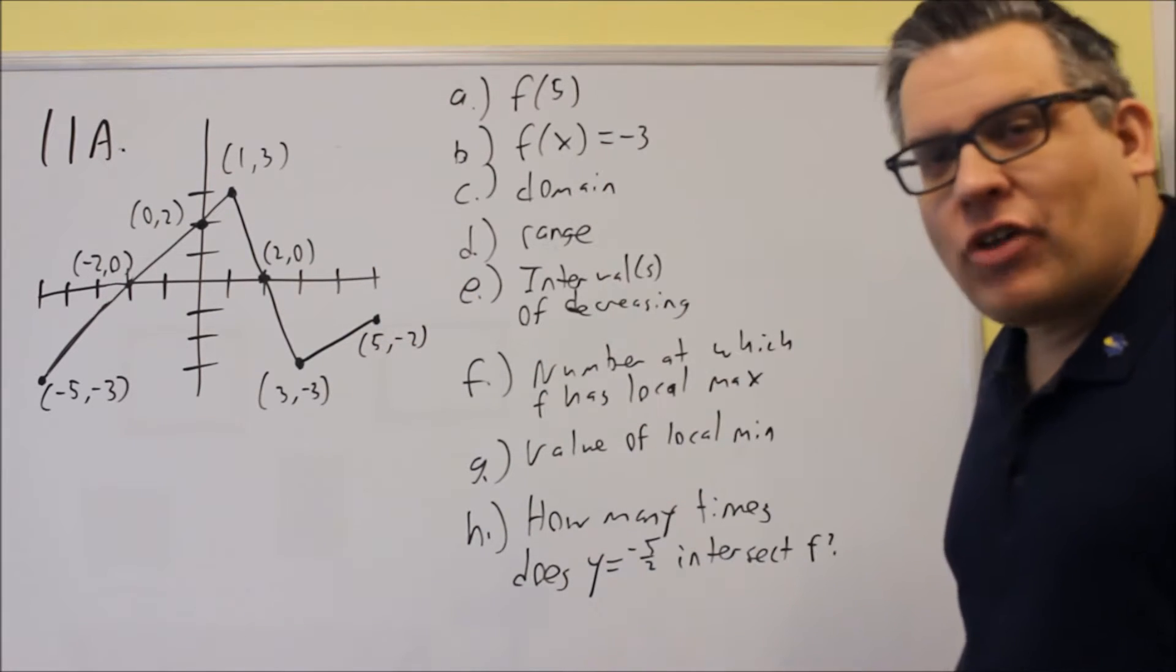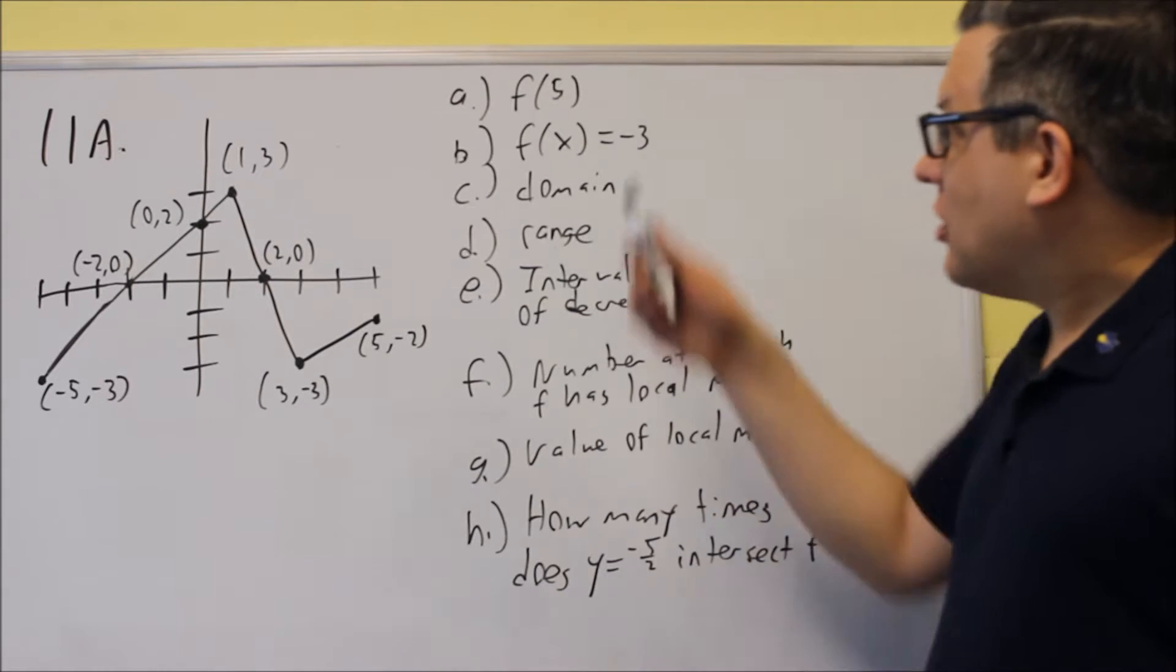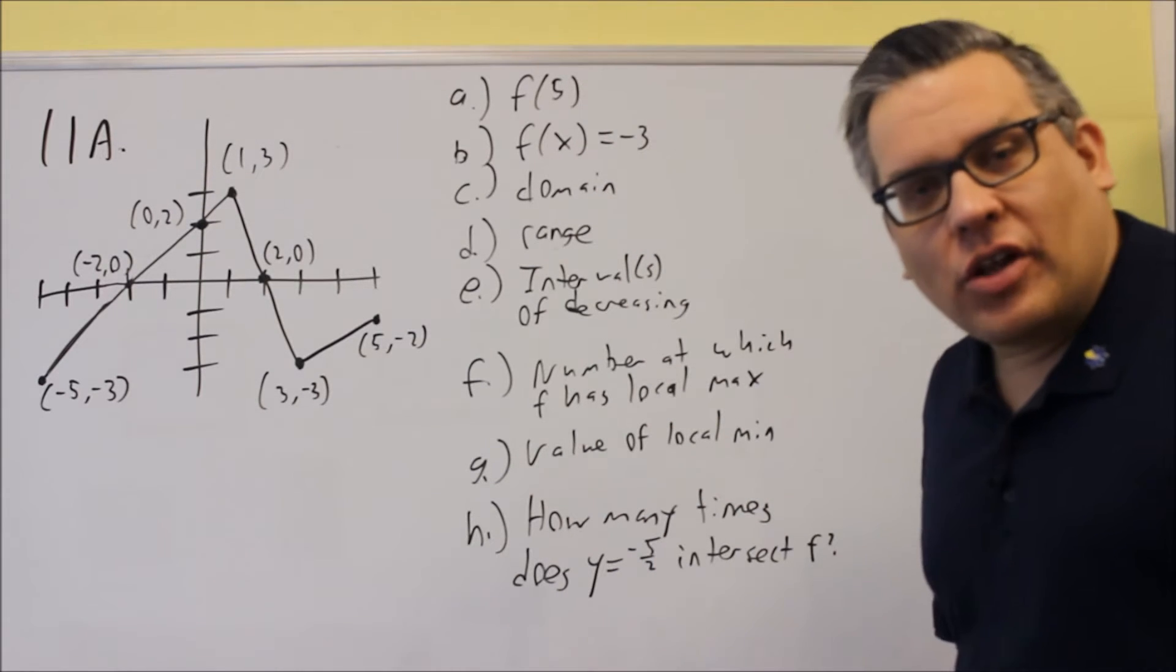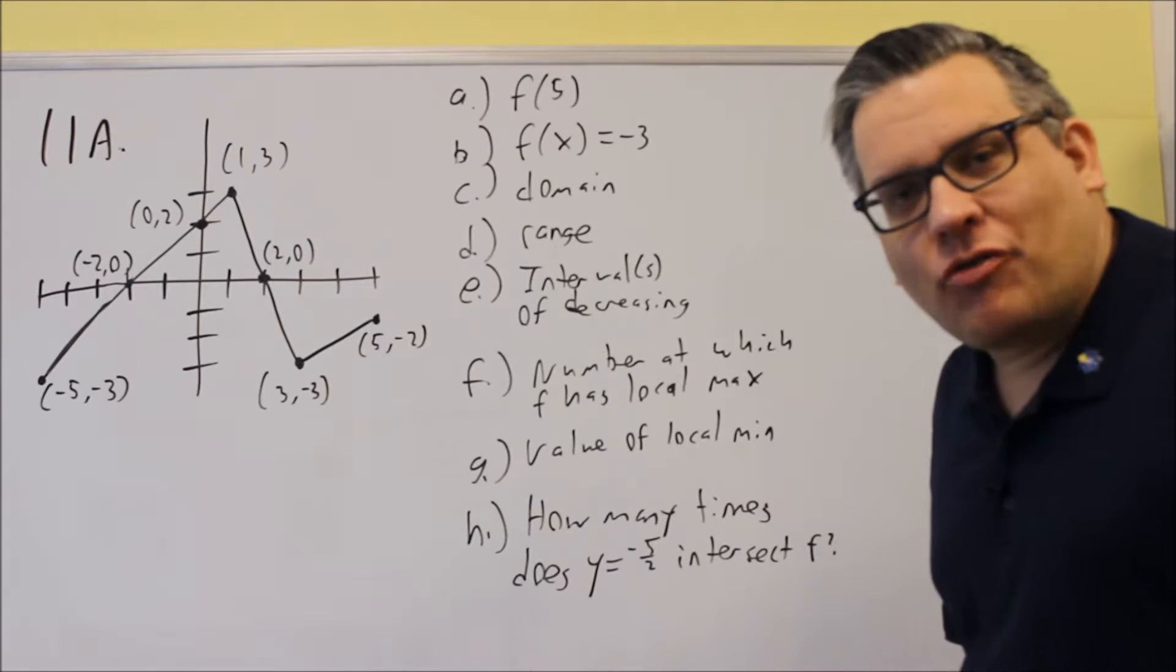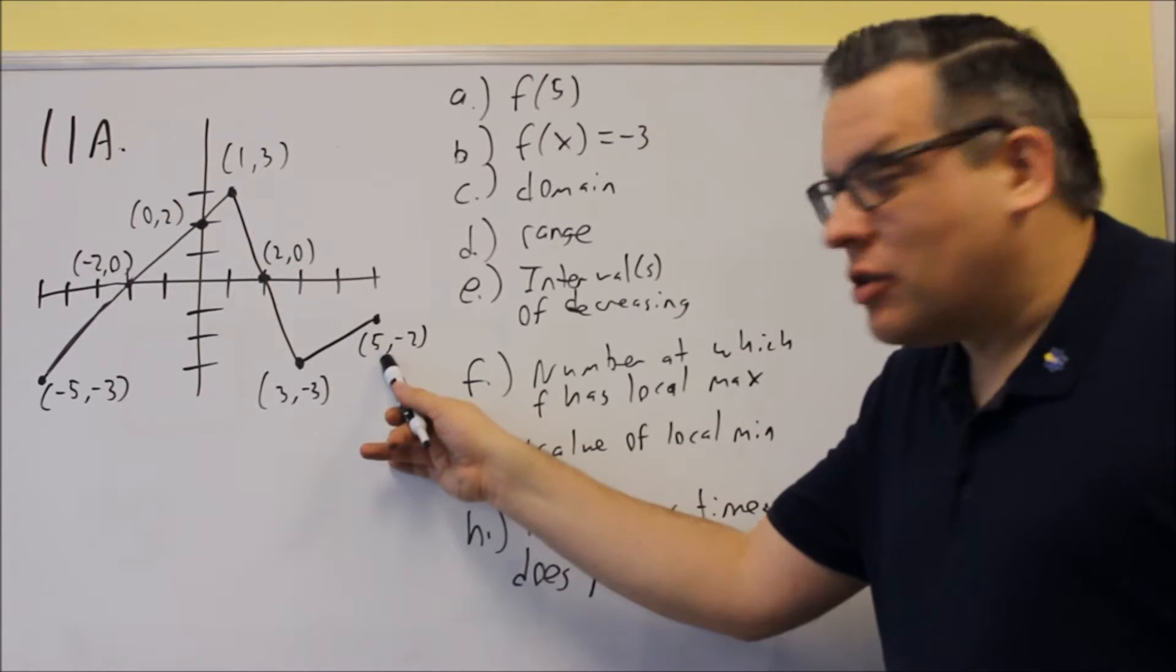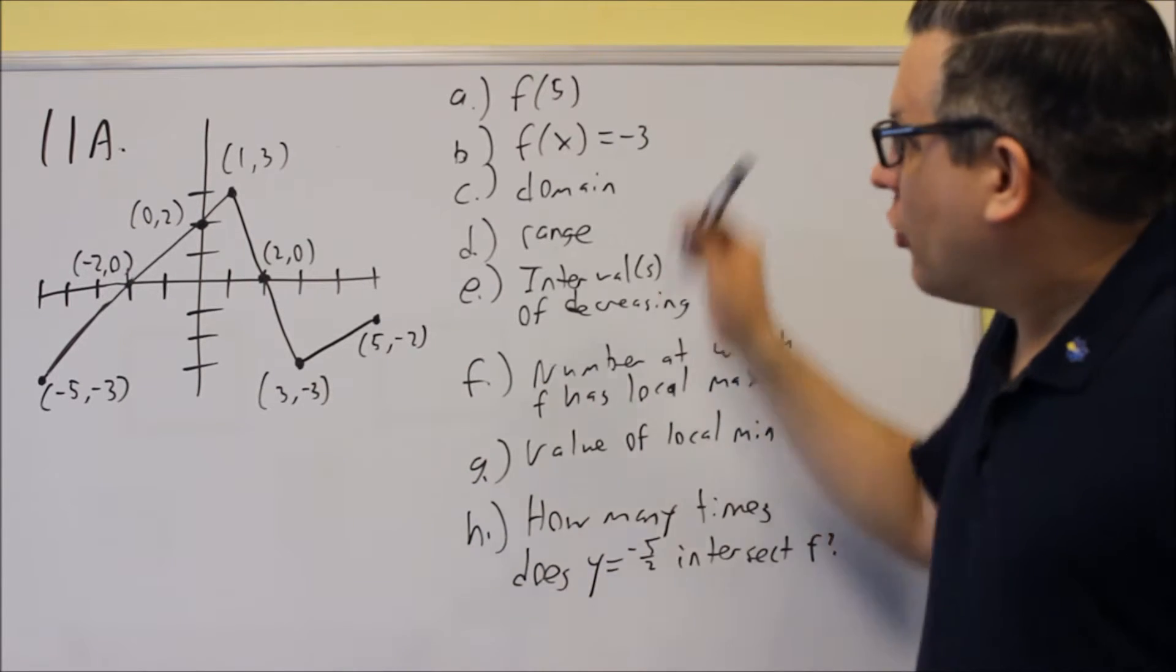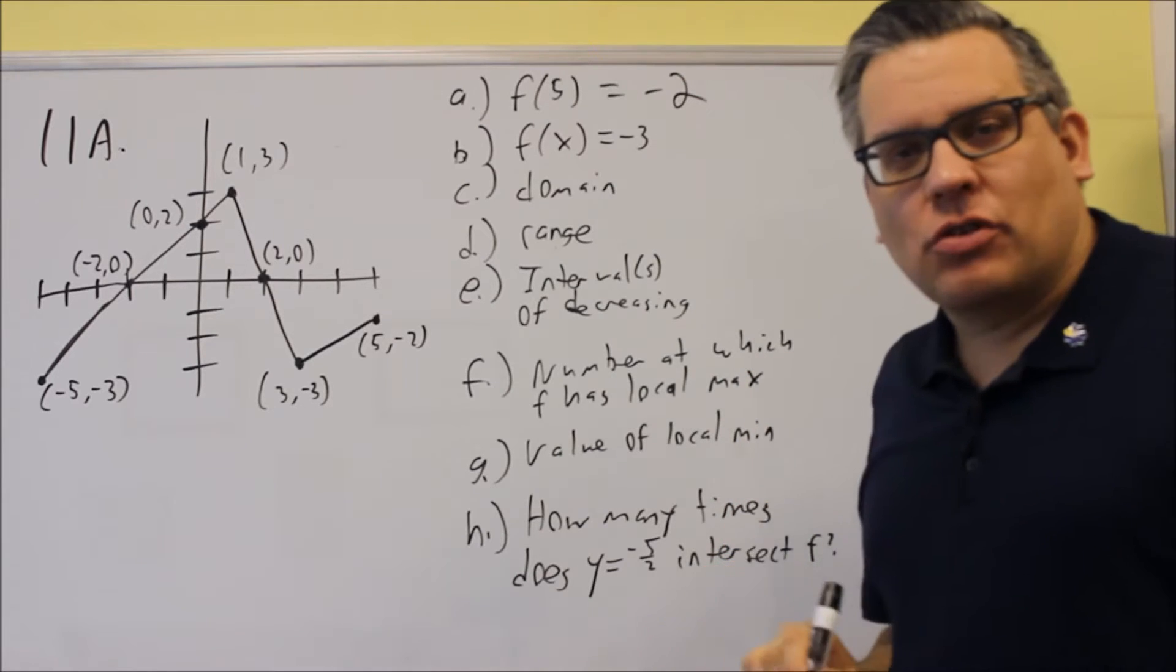Now the first one asks us to find f of 5. Now what this is telling us to do is it's saying what is the y value when x is equal to 5? So we can just look at our graph here, and so at the x value of 5, the y value is negative 2. So what I would put here for a is I would just put in negative 2.